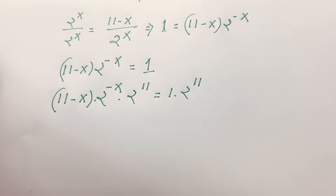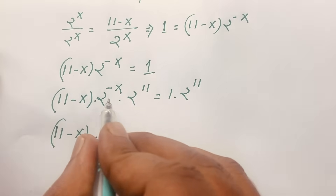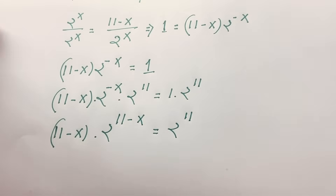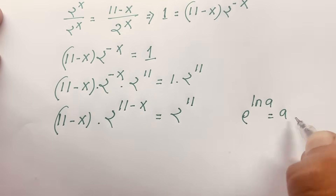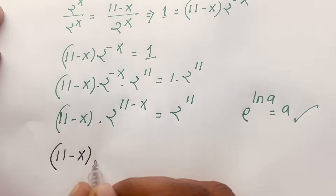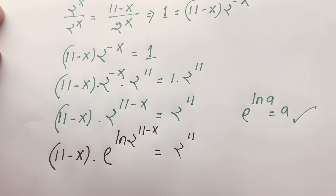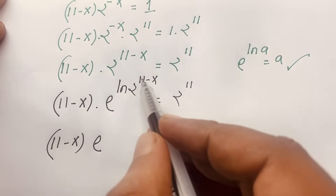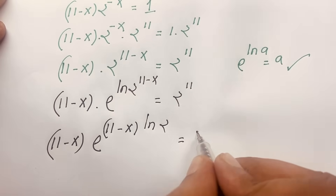Combining the exponents on the left side — minus x plus 11 — we get (11 minus x) times 2 to the power (11 minus x) equals 2 to the power 11. Now, to use the Lambert W function, we apply the identity e to the power ln(a) equals a. So (11 minus x) can be written as (11 minus x) times e to the power (11 minus x) times ln 2, equal to 2 to the power 11.